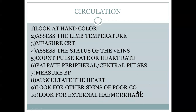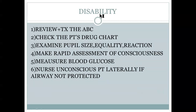For the Disability (D) part, always re-treat and reassess ABCs first. After treating any breathing or circulation problem, go back to the beginning of the ABCDE approach so nothing is missed. Check the patient's drug history — opioids, benzodiazepines, or barbiturates may cause decreased level of consciousness.